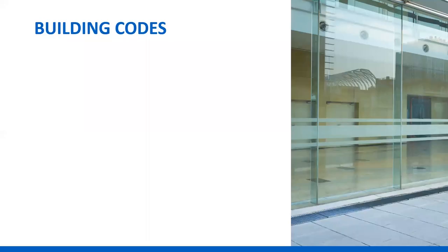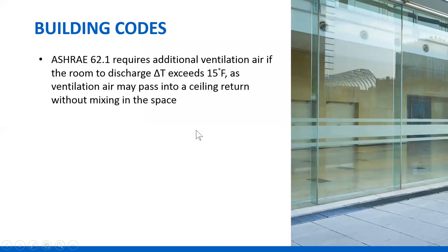We do have to deal with the rules. ASHRAE 62.1 says if you put warm air out of the ceiling, some of the ventilation air is going to pass out through the ceiling return, short circuiting. If the delta T — discharge to room differential — exceeds 15 degrees, it's strongly recommended that you increase the ventilation rate by dividing the required minimum ventilation by 0.8, which results in a little over 20% increase in ventilation.